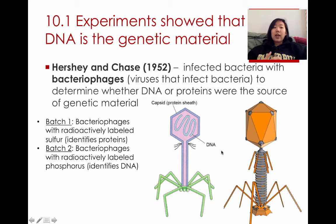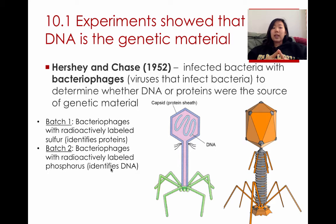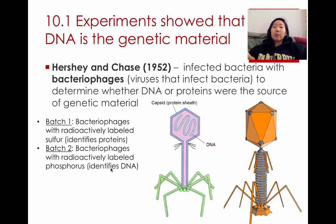Hershey and Chase wanted to figure out whether it was the protein or the DNA that was being transferred genetically. They labeled one batch of bacteriophages with radioactively labeled sulfur. Only protein has sulfur in some of its amino acids, so they knew sulfur would indicate the presence of proteins. They also took a separate batch of bacteriophages and radioactively labeled the phosphorus, because DNA has a lot of phosphates, which would be indicative of the DNA.